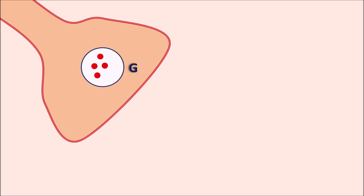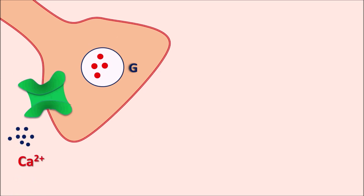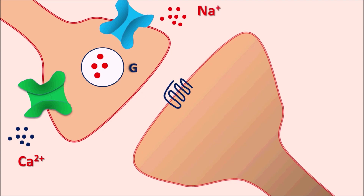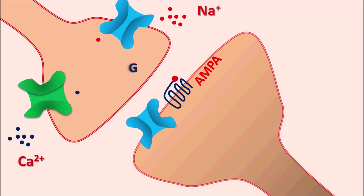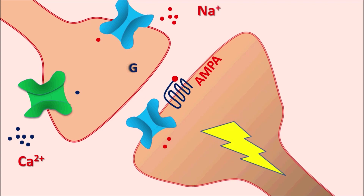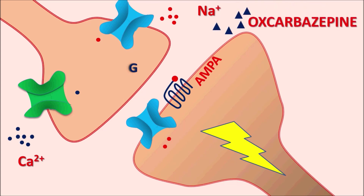Within the CNS, pre-synaptic neurons store excitatory neurotransmitters such as glutamate. Glutamate is released by calcium-mediated exocytosis, but to produce this exocytosis the pre-synaptic neuron must be excited by voltage-gated sodium channels. At the post-synaptic neurons, AMPA receptors are expressed on the post-synaptic membrane coupled with fast-acting sodium channels. When sodium enters the pre-synaptic neuron, it triggers calcium entry, which causes exocytosis and release of glutamate.